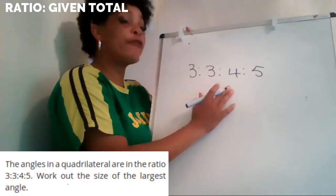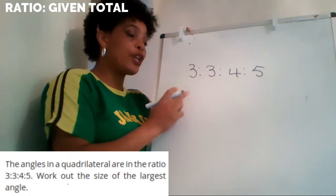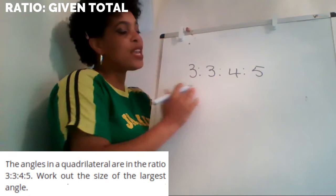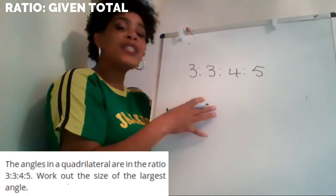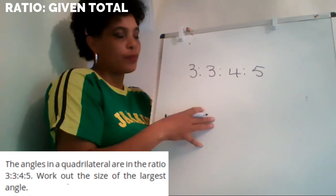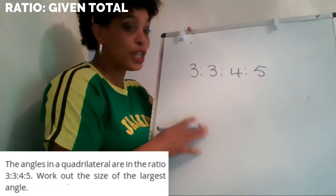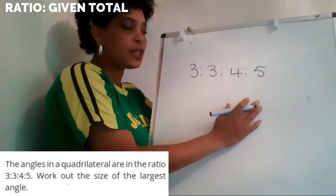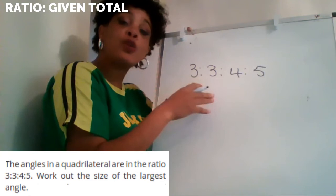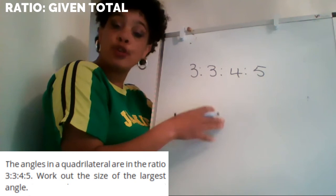In this question, we're given the ratio three to three to four to five, and we're told these are the ratios of the angles in a quadrilateral. The question is: what is the size of the largest angle? Pause the video, have a go, and then come back. You might wonder what total you're sharing — but they don't need to tell you, because angles in a quadrilateral add up to 360 degrees.